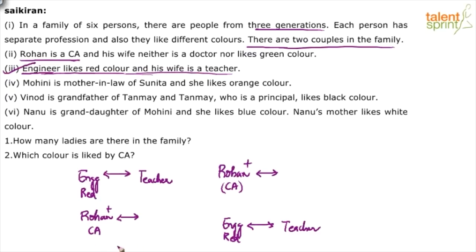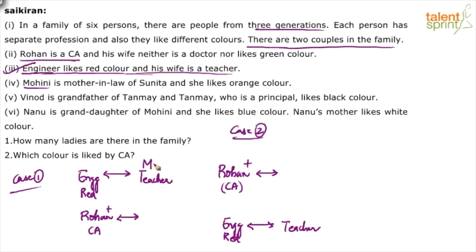In Case 1, if Mohini is the wife in the upper couple and mother-in-law of Sunita, then Mohini's son is Rohan and Rohan's wife is Sunita — so Mohini becomes the mother-in-law of Sunita. In this case, Mohini is the wife of the engineer, making Sunita the teacher. So Rohan is the son of the engineer.